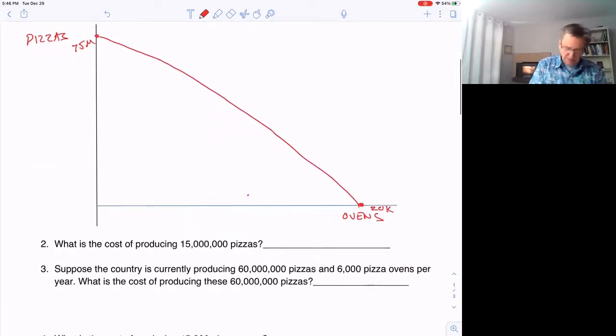So what's the cost of producing 15 million pizzas? Well, it's 20,000 pizza ovens minus 18,000 pizza ovens. So it should be 2,000 pizza ovens.